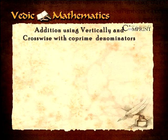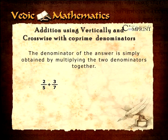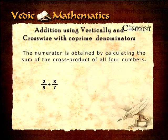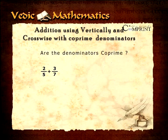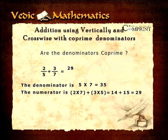Addition using vertically and crosswise with co-prime denominators. If the denominators in the two fractions to be added are co-prime, that is their highest common factor is 1, then the vertically and crosswise sutra is brought into play. The denominator of the answer is simply obtained by multiplying the two denominators together. The numerator is obtained by calculating the sum of the cross product of all four numbers. The following example illustrates this quick method for adding such fractions. Are the denominators co-prime? Yes, the denominator is 5 multiplied by 7 which equals 35. The numerator is the sum of the cross product, that is 2 multiplied by 7 plus 3 multiplied by 5 equals 14 plus 15 which equals 29. Therefore, the answer is 29 by 35.